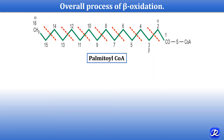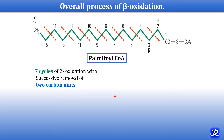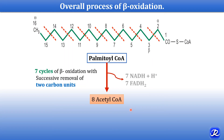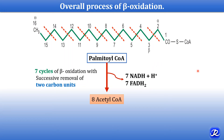Palmitoyl-CoA is a 16-carbon compound that undergoes seven cycles of beta oxidation, with successive removal of two-carbon units, to form eight acetyl-CoA. Seven NADH and seven FADH2 are also formed. For the 16-carbon palmitoyl-CoA there are seven splits — yielding eight acetyl-CoA molecules — and seven cycles of beta oxidation produce seven NADH and seven FADH2.